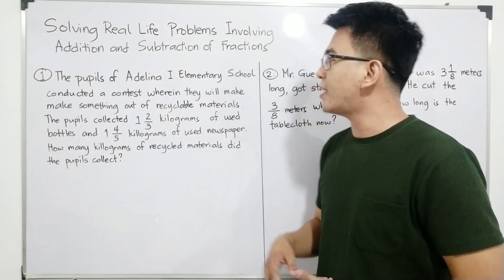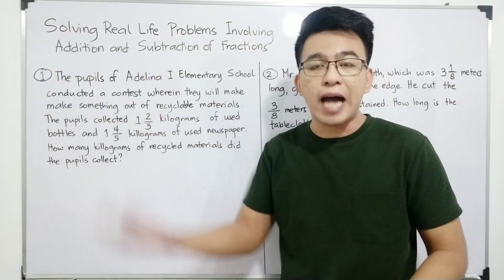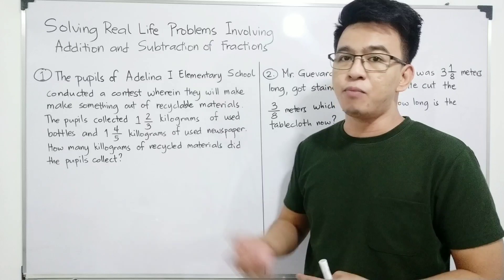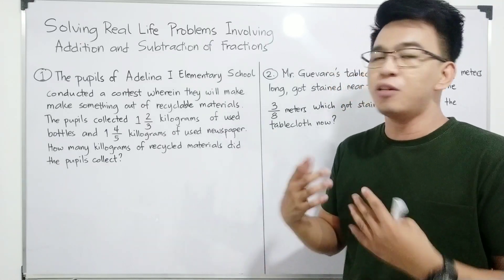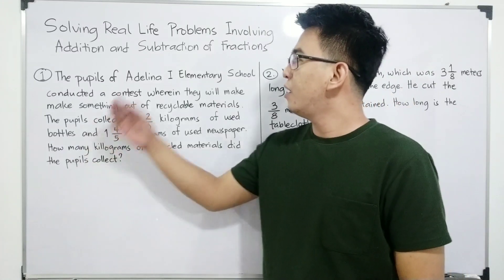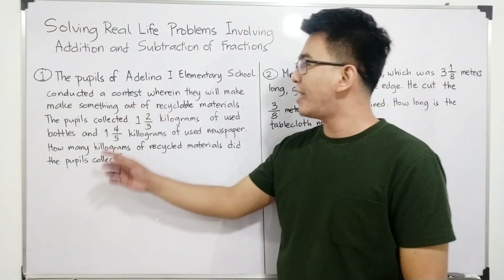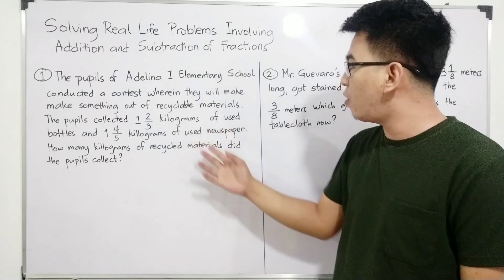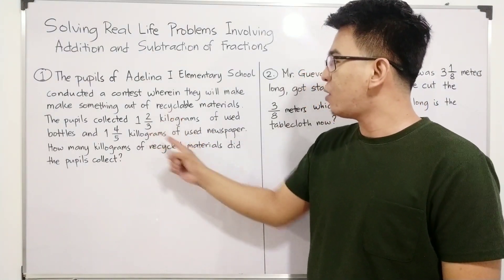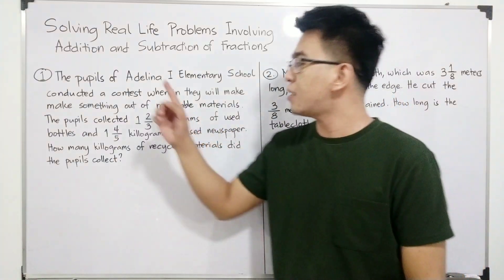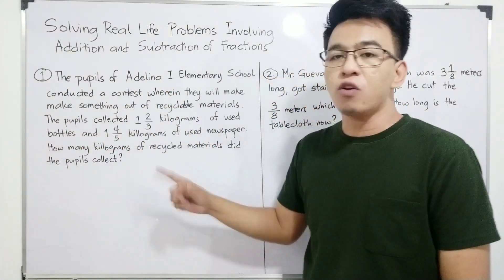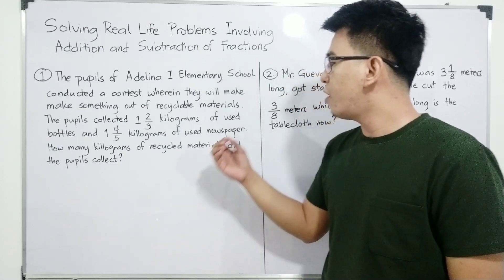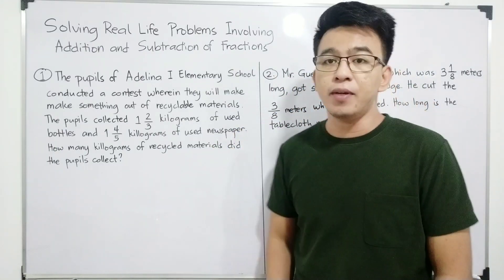The most basic thing here, guys, aside from knowing how to add and subtract fractions and mixed numbers, it is important for you to know and to understand the problem well, so that it's easier for you to solve. So let's have the first problem. The pupils of Adelina I Elementary School conducted a contest wherein they will make something out of recyclable materials. The pupils collected 1 and 2 over 3 kilograms of used bottles and 1 and 4 over 5 kilograms of used newspaper. How many kilograms of recycled materials did the pupils collect?